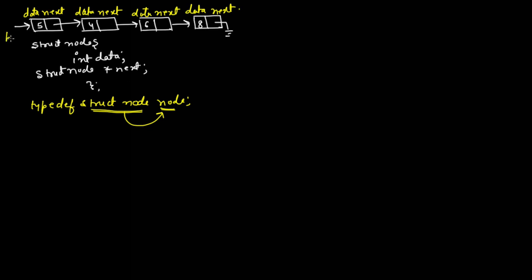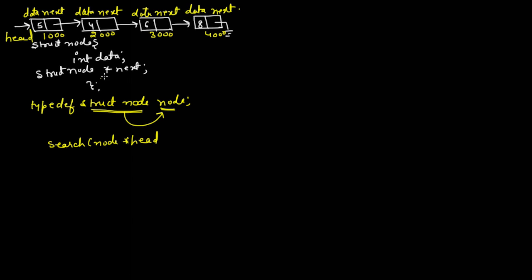We are going to make a function that takes the address of the head of the linked list and searches for some data. The node addresses are 1000, 2000, 3000, and 4000. The function is called search, and it takes node star head — the address of the head node — and int info, the information we need to search for.